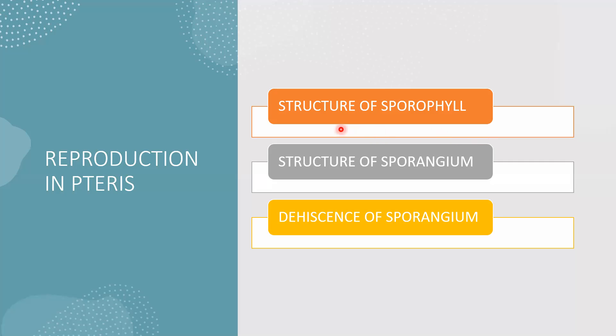In reproduction we will study what is the structure of a sporophyll. Sporophylls are the leaves which bear the sporangia. When sporangia are borne on the leaves, the leaf is called a sporophyll. We will also study the structure of the sporangium and how the sporangium opens to liberate the spores.